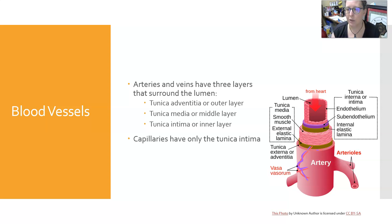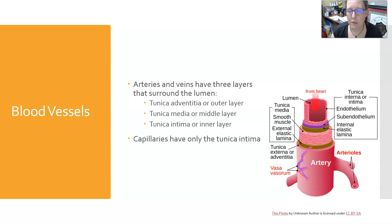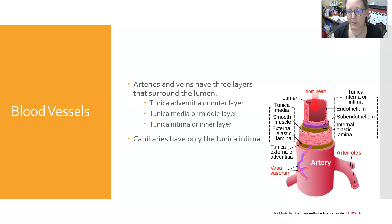The arteries and veins have three layers surrounding the lumen — the lumen is the opening where blood flows. The tunica adventicia is the outer layer that anchors arteries and veins throughout the body. The tunica media is the middle layer containing muscles that allow arteries to contract or dilate; veins can also contract and dilate somewhat. The tunica intima, or inner layer, is the endothelium actually in contact with the blood.